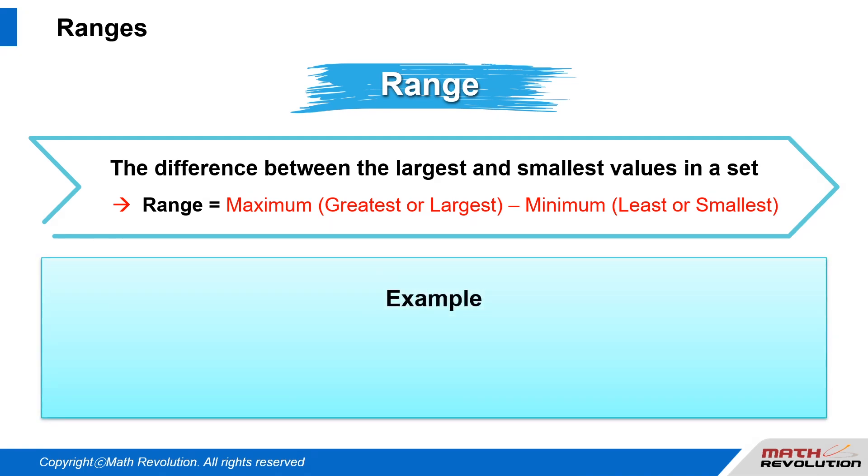For example, negative 1, 3, 5, and 9. Here the largest term is 9 and the smallest term is negative 1. Therefore, the range is largest term minus smallest term, which equals 9 minus negative 1, which equals 10.